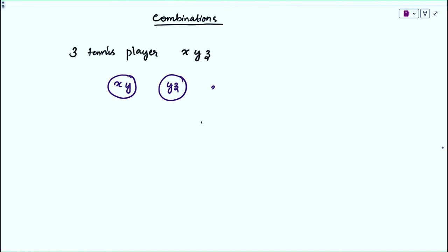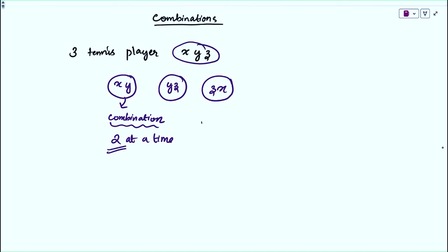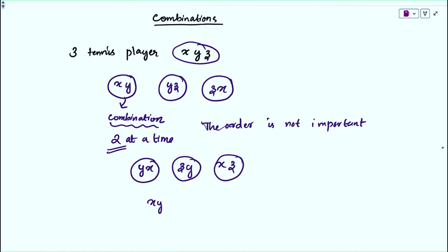Each such selection is called a combination — a combination of 3 different objects taken 2 at a time. In a combination, the order is not important. So we can note that {x, y} is equal to {y, x} because the order is not important here.